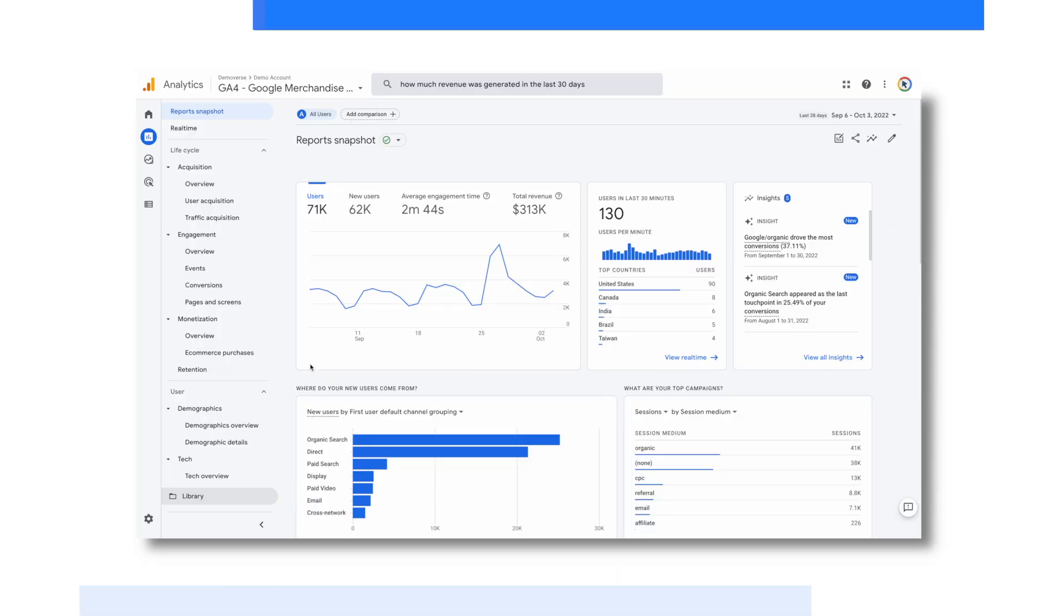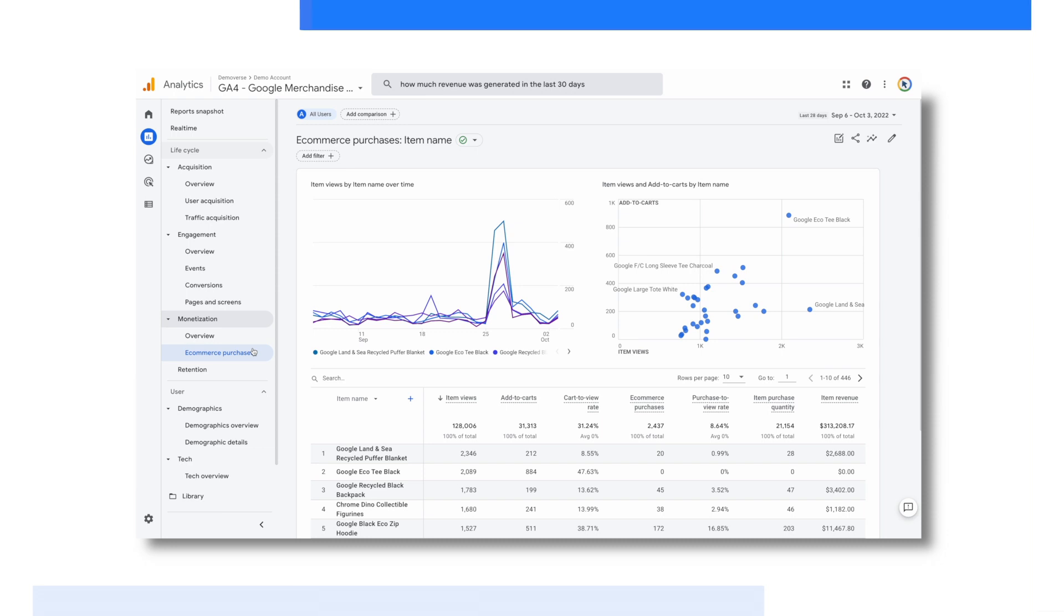For example, say the marketing team at the Google Merchandise Store wanted to get a better understanding of product performance as they prepare for a new Performance Max campaign. The team will want to navigate to the pre-built e-commerce purchases report. Here, they can find key performance metrics for each of their products.